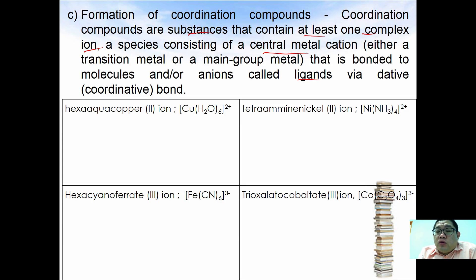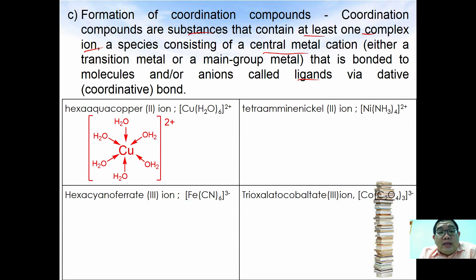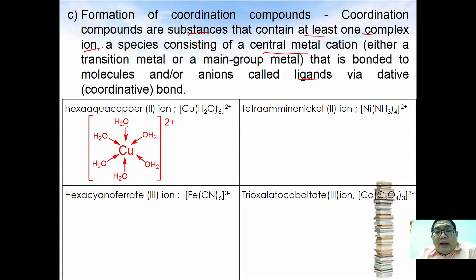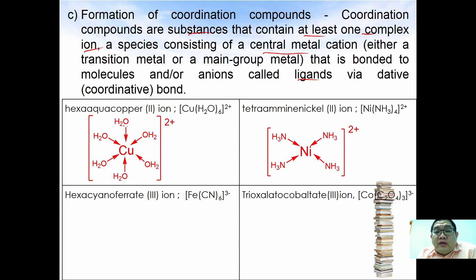That is why it is also called a coordination bond — the dative bond is formed between the central metal ion and the ligand. For example, in hexa aqua copper(II) ion, the lone pair electrons on oxygen form dative bonds to copper, holding copper in a hexagonal structure. This is how [Cu(H2O)6]2+ looks like.